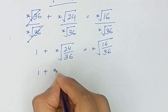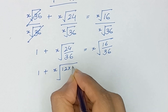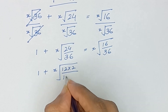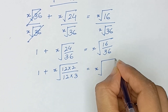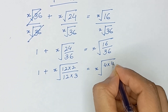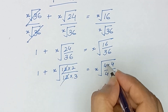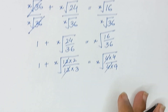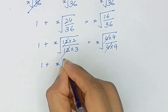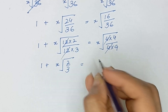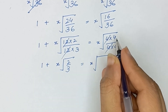1 plus x-root of 24 can be written as 12 times 2, and 36 can be written as 12 times 3. Similarly, 16 can be written as 4 times 4 and 36 can be written as 4 times 9. So this 12 and 12, 4 and 4 will be cancelled out, and it will become 1 plus x-root of 2 divided by 3 is equal to x-root of 4 divided by 9.